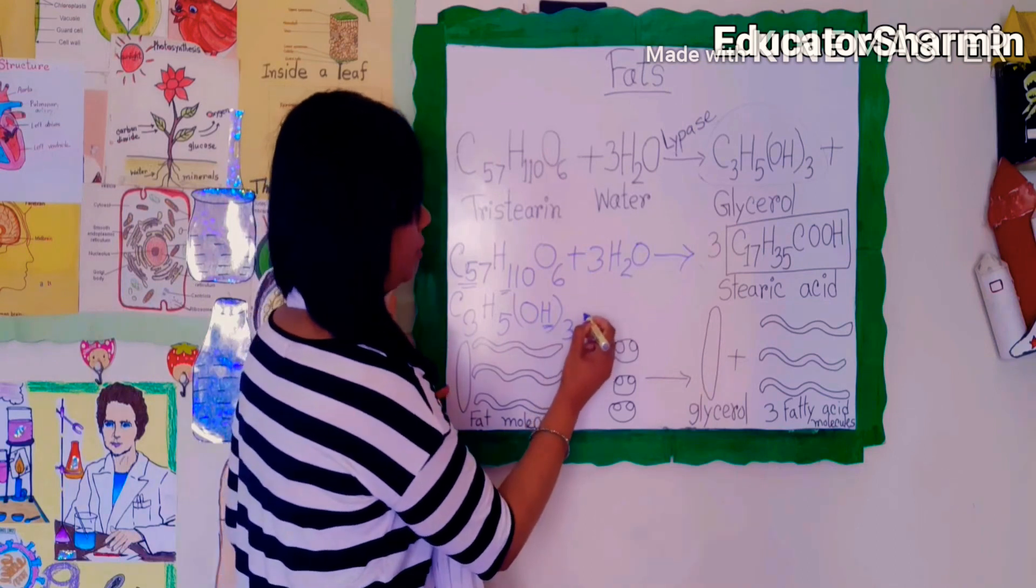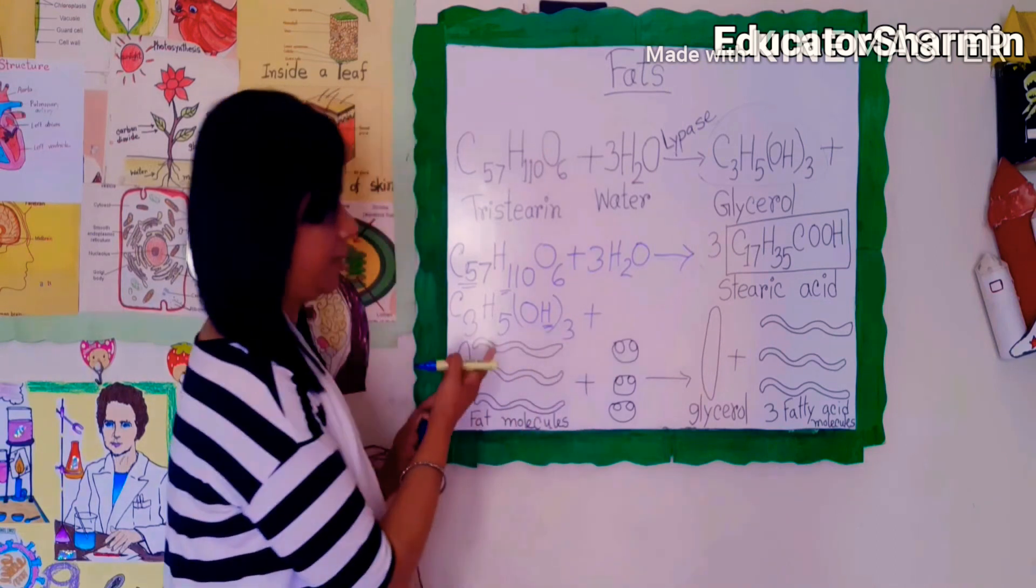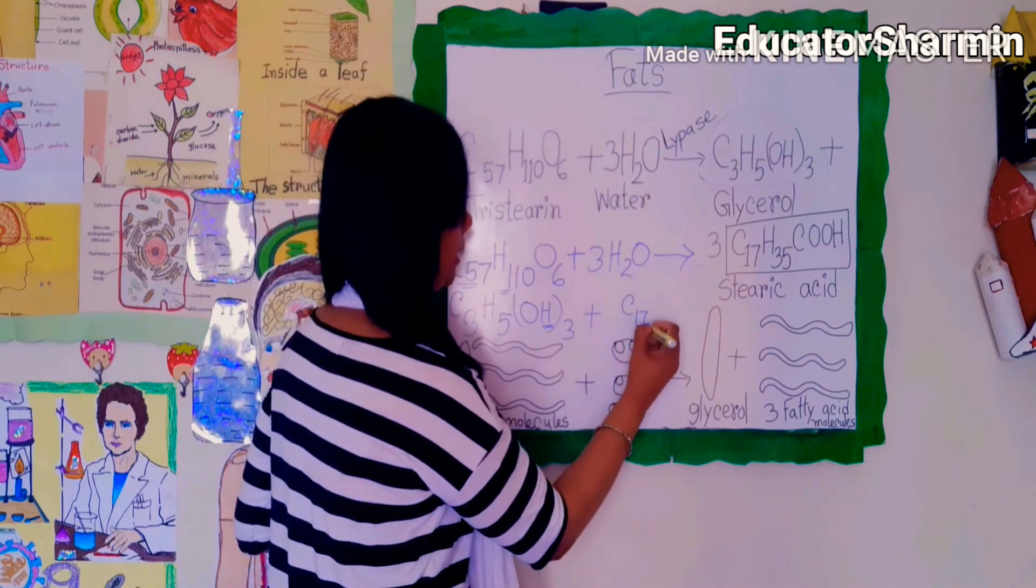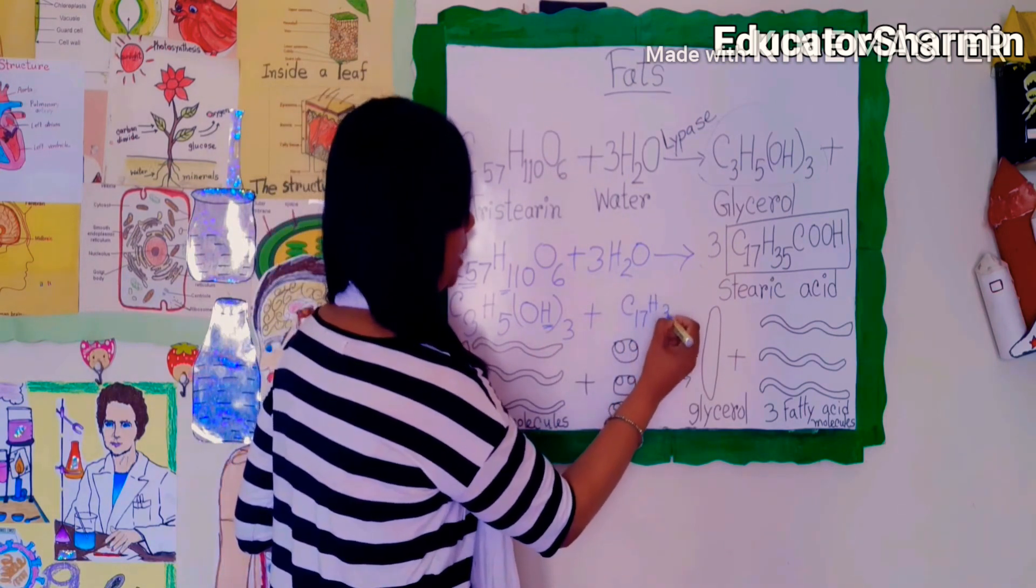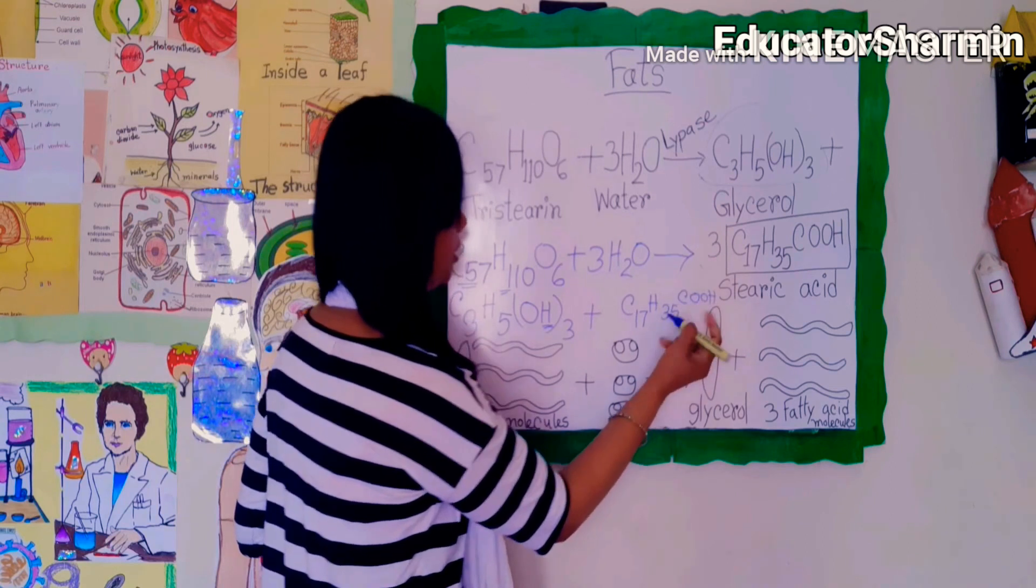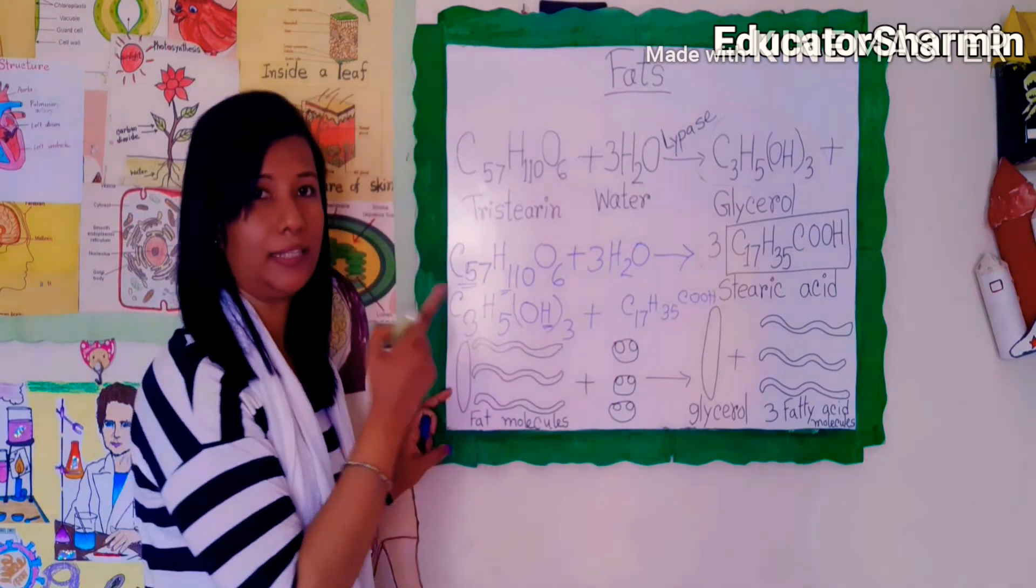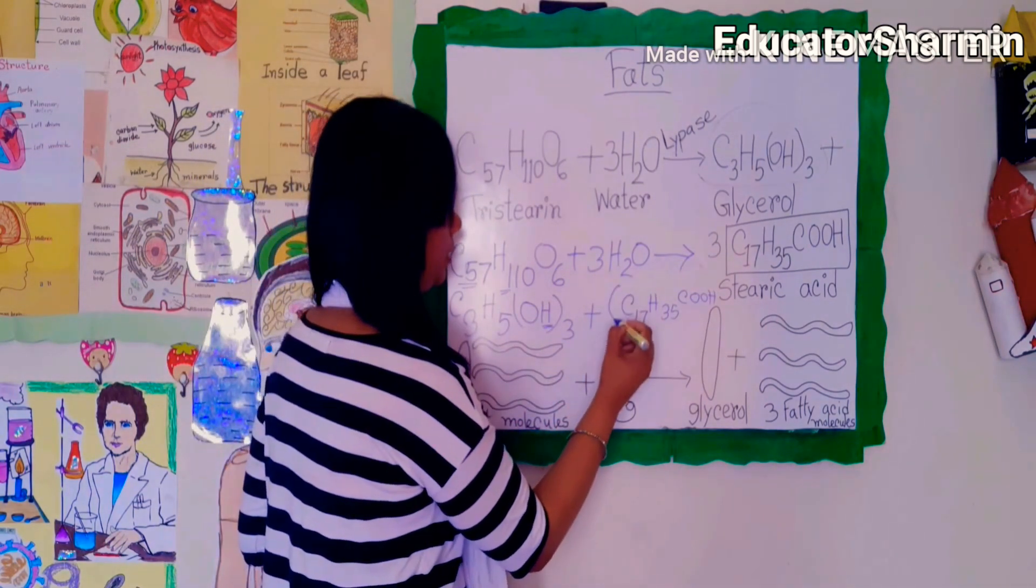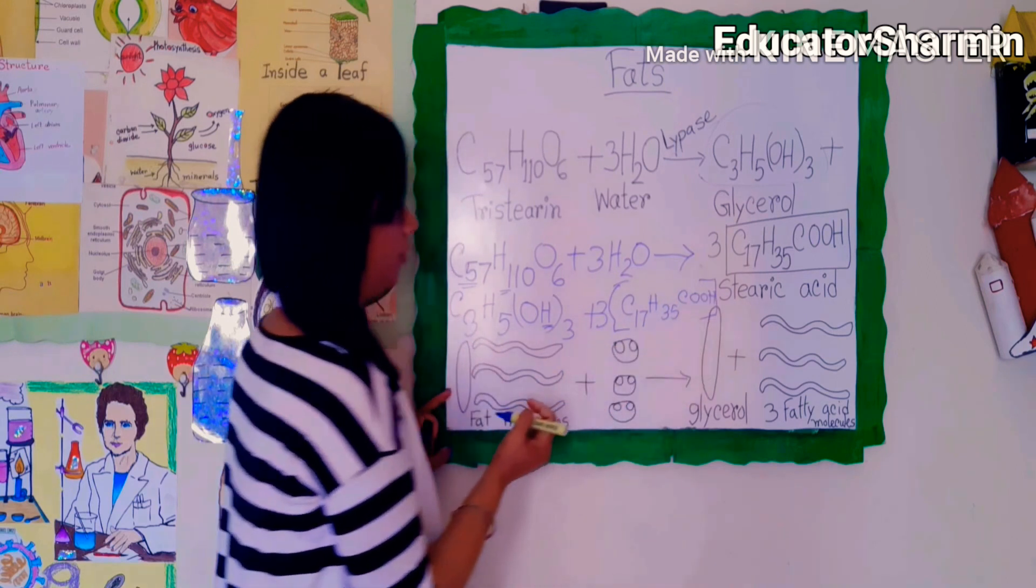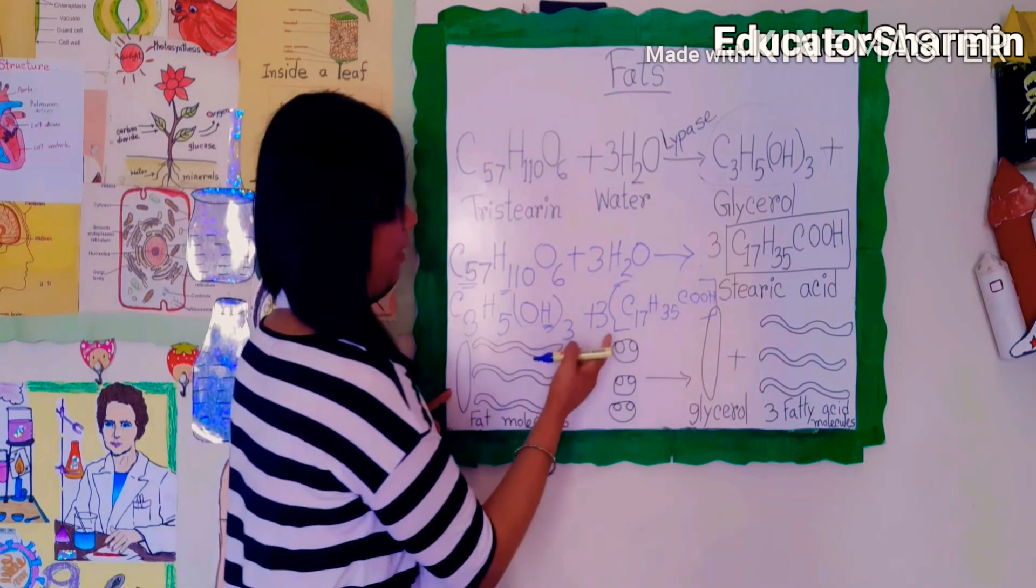It also produces stearic acid. Here is C17H35COOH - that is the stearic acid, the fatty acid. There are three of these.